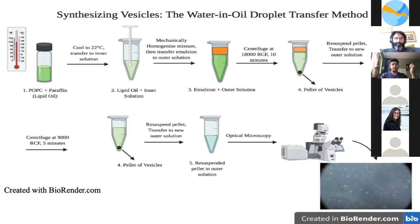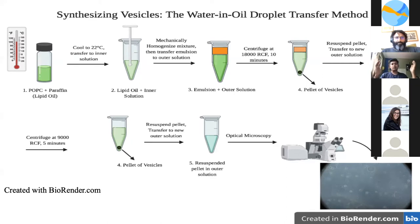We transfer the lipid oil to our inner solution in a microfuge tube and homogenize for roughly 10 to 12 seconds. Importantly, the lipid oil must be cooled to 22 degrees Celsius prior to use. We then transfer the emulsion from the homogenized mixture to our outer solution containing glucose and centrifuge at 18,000 RCF for roughly 10 minutes, producing a pellet of vesicles. Subsequent centrifugation steps at 9,000 RCF for five minutes remove lipid aggregates that didn't form into vesicles.